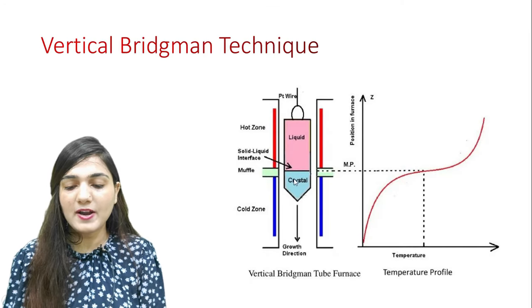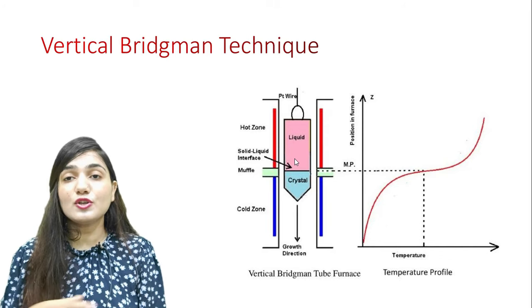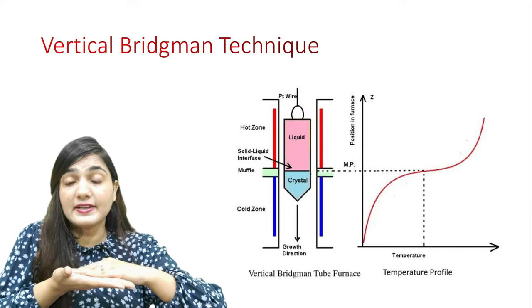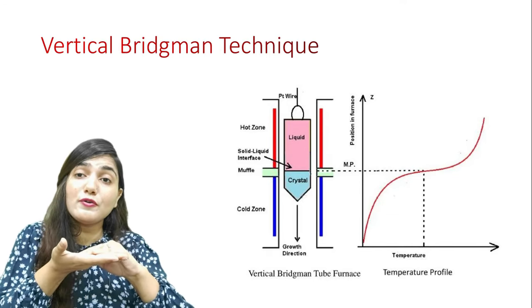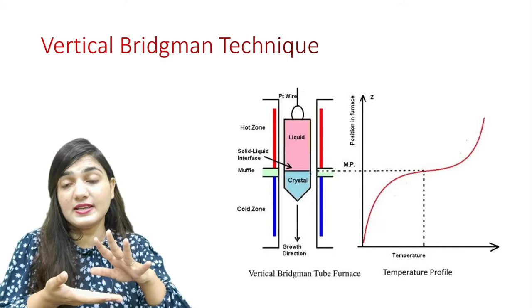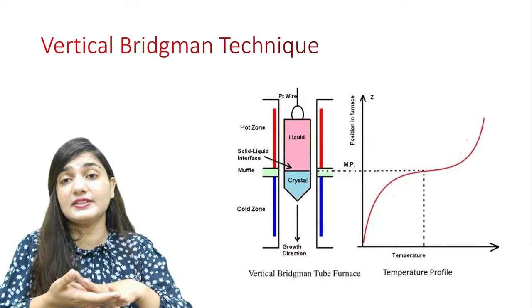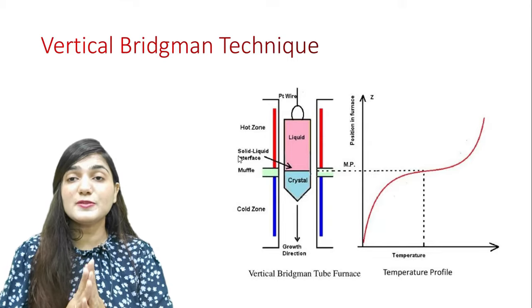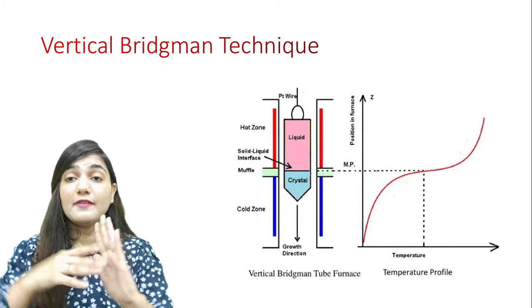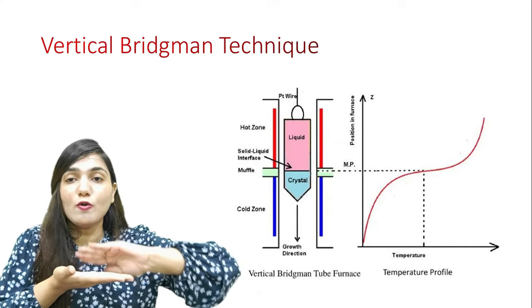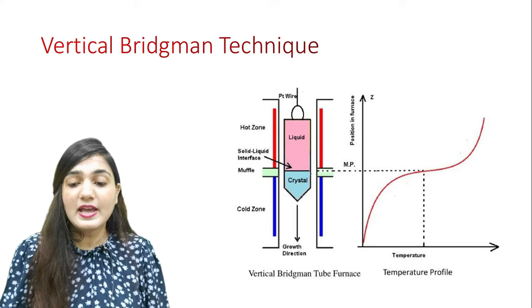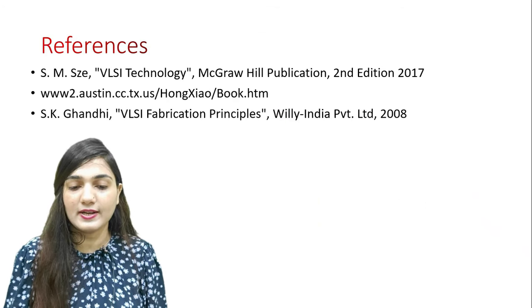In the vertical Bridgman technique, we move vertically from hot zone to cold zone. The horizontal Bridgman technique had problems: the melt surface could accumulate impurities, and if quartz is used, there is more oxygen in the melt. To avoid these issues, we prefer the vertical Bridgman technique. Also, in the vertical technique, the crucible is completely cylindrical and the ingot grows in a circular cross-section, whereas in the horizontal technique, the base cannot be completely circular due to surface pressure.